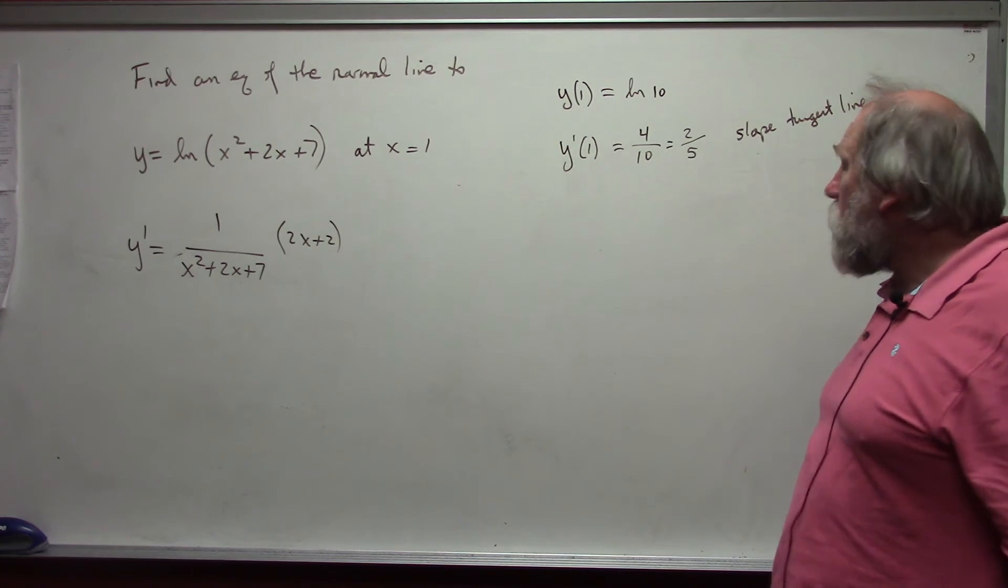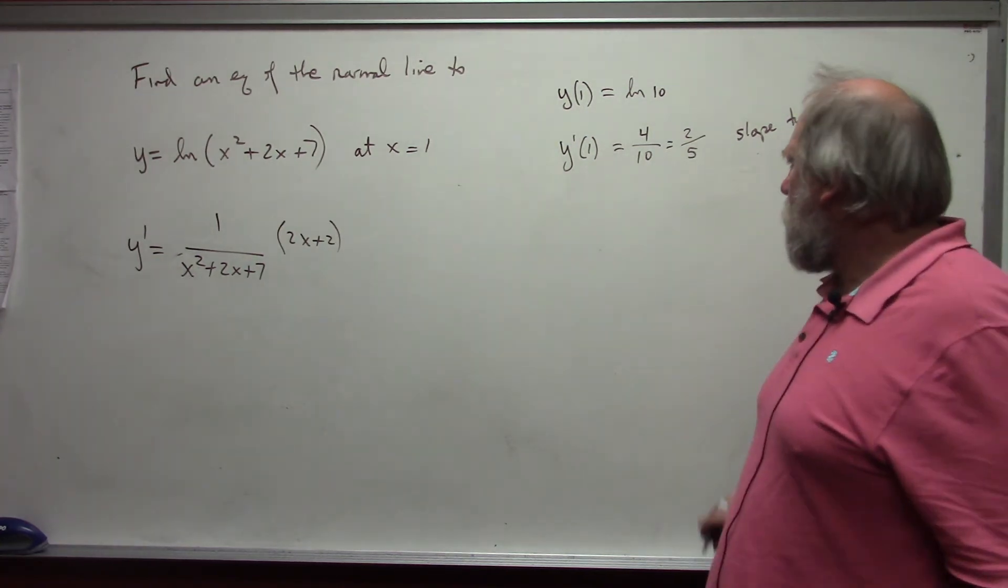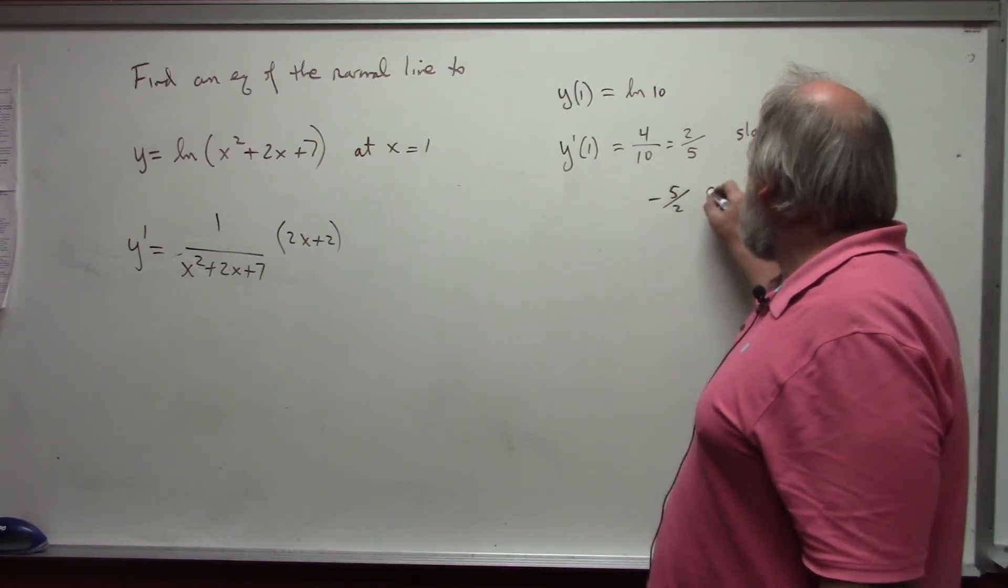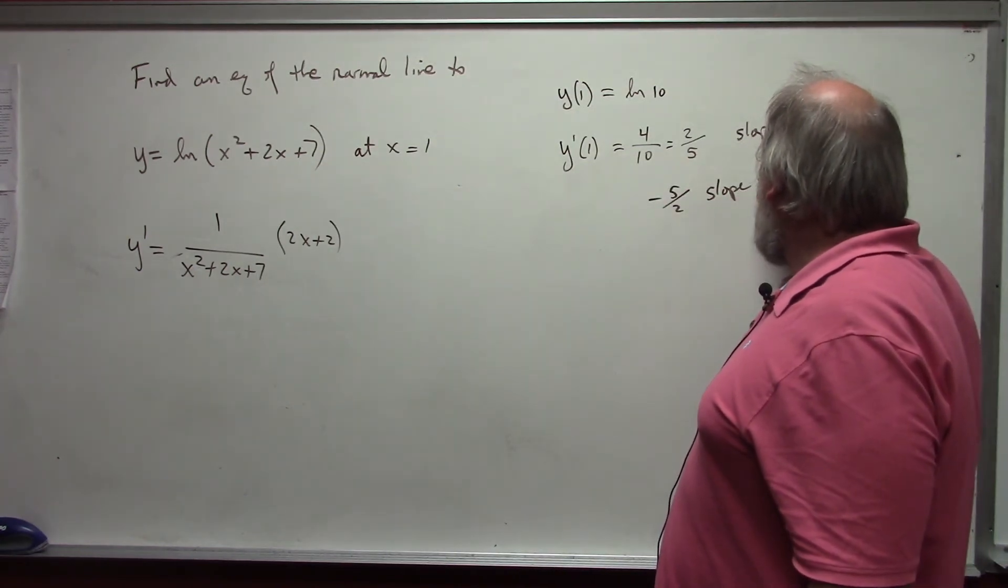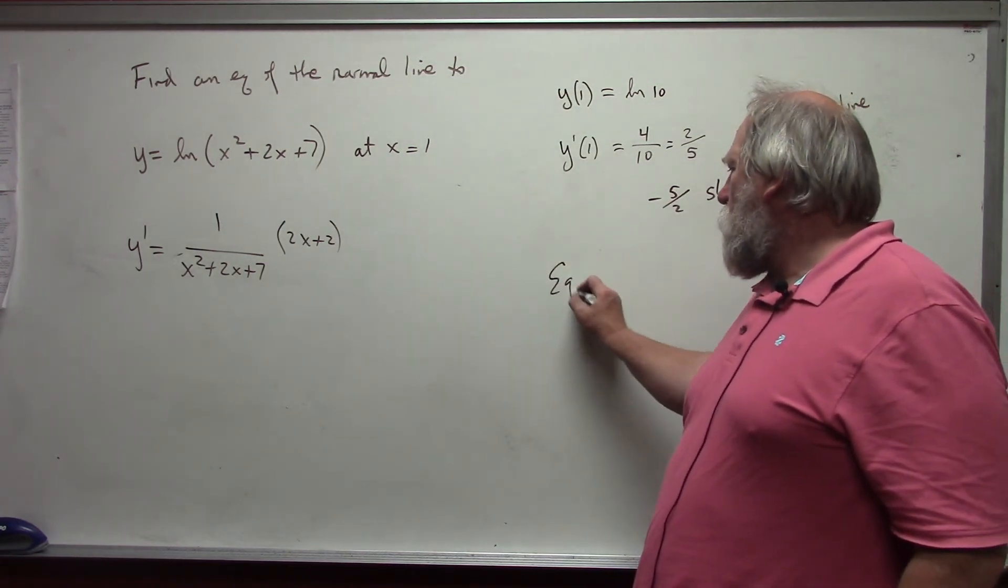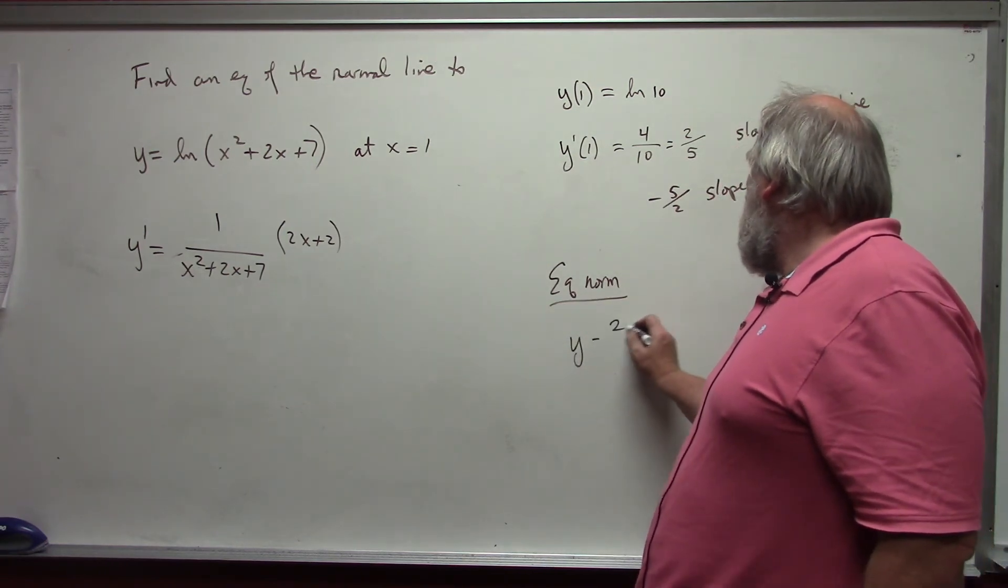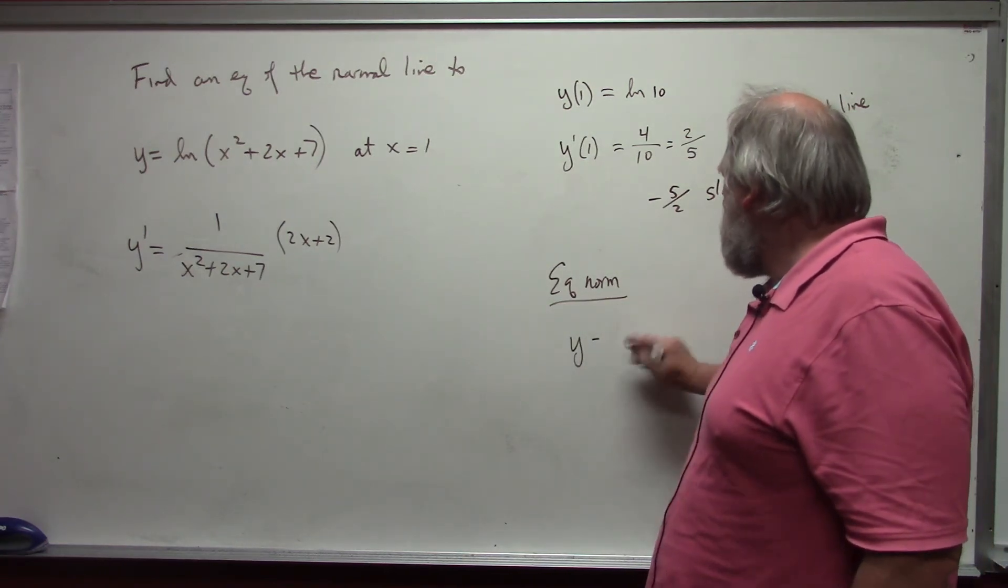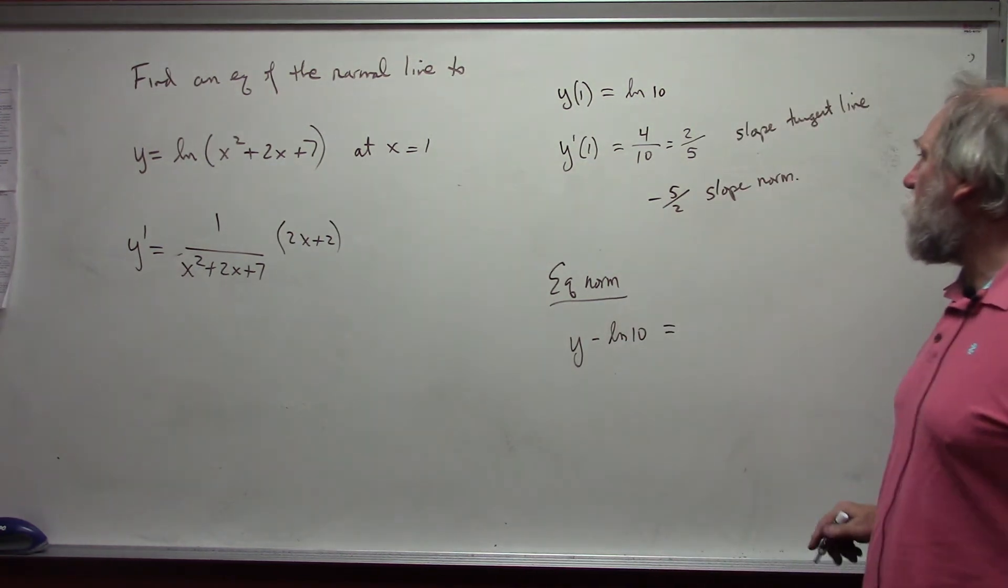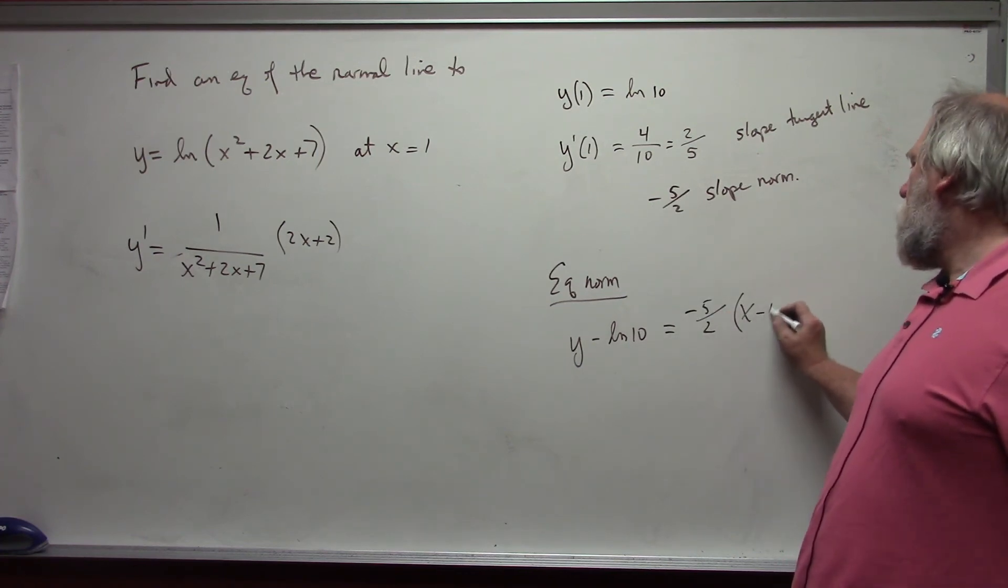So, this represents the slope of the tangent line. To get the slope of the normal line, I have to take the negative reciprocal. It is perpendicular to the tangent line. So, negative 5 halves is the slope of the normal line. Which means the equation of the normal line becomes y minus natural log of 10. My y value is equal to my slope. Negative 5 halves times x minus 1.